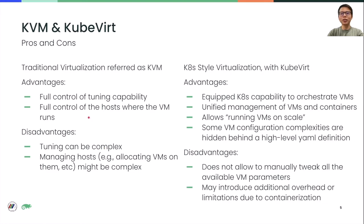With KVM, you can decide where the VM runs, but managing them can quickly become troublesome if you have thousands of them. This is why KubeVirt came into play. KubeVirt inherits Kubernetes capabilities to orchestrate VMs and scale, hiding VM configuration complexities behind a high-level YAML definition. This also turns out to be a disadvantage since you don't have full control of all VM parameters. The container runtime might also introduce some overhead due to resource usage or accounting limitations.